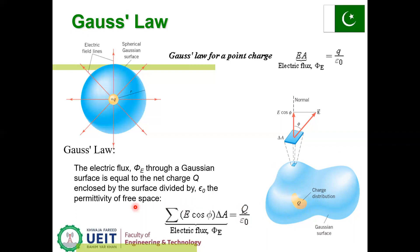Gauss's law states that the electric flux phi_E through a Gaussian surface equals the net charge Q enclosed by the surface divided by epsilon naught, the permittivity of free space. The electric flux phi_E equals the sum of E cosine phi delta A, which equals Q over epsilon naught. Q is the total charge enclosed. If we know the total charge and divide by epsilon naught, we can find the electric flux phi_E.